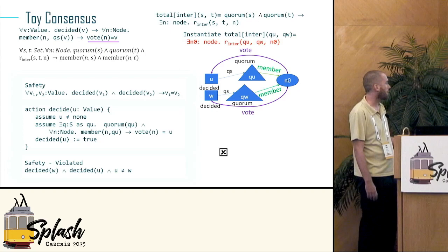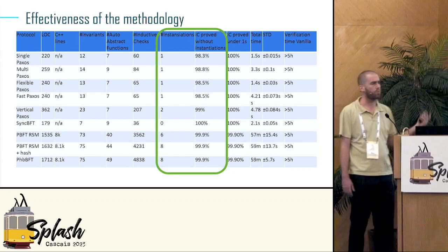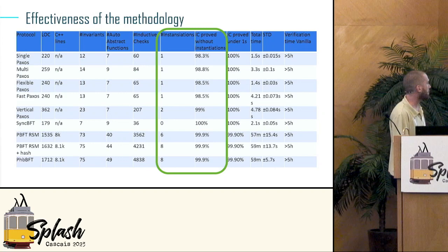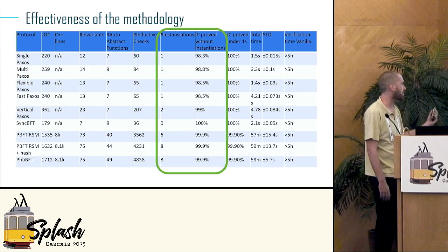We tried our technique on many protocols. Some of them — PBFT variants — were extracted into C++ code. What I want to show is that we don't really need many instantiations. Most of our inductive checks run without any instantiations — they just pass through, with the solver doing all the proof work for us. That's good news.